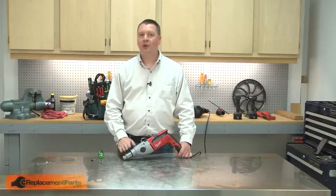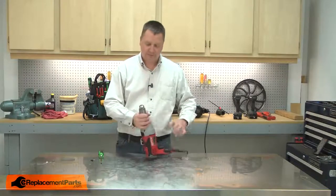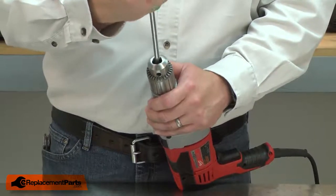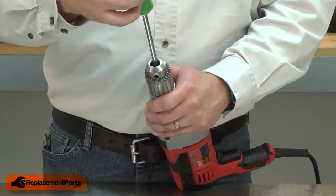I'll begin by removing the old chuck screw from the chuck. I'll use a number three Phillips screwdriver to remove the screw and remember it's reverse thread.